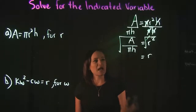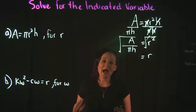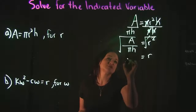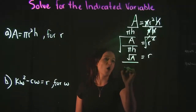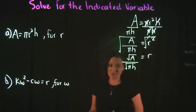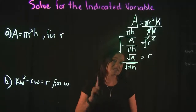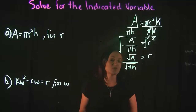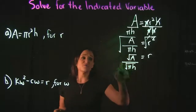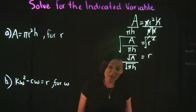On the left-hand side, I have the square root of A divided by pi h. Using the quotient rule for radicals, I can split this up and say it is the square root of A over the square root of pi h. However, we're not done — when it comes to radicals, we do not want radicals in the denominator of a fraction. That is not considered simplified, so we need to continue.